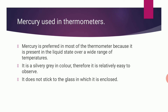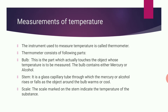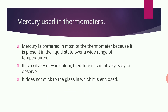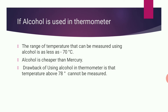Mercury is preferred in most thermometers because it is present in the liquid state over a wide range of temperature. It is silvery gray in color and easy to observe. It does not stick to the glass container. If alcohol is used in the thermometer, the range of temperature that can be measured is less than 70 degrees centigrade. Alcohol is cheaper than mercury, but its drawback is that temperatures above 78 degrees centigrade cannot be measured.